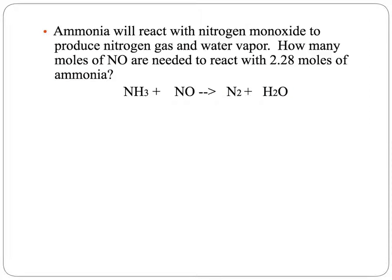Here's another problem. Ammonia will react with nitrogen monoxide to produce nitrogen gas and water vapor. We have the skeleton equation, but it's not balanced — we have three hydrogens on one side and only two on the other. The equation is a bit trickier because nitrogen appears in two different substances: the ammonia and the nitrogen monoxide. The balanced equation has 4 moles of ammonia reacting with 6 moles of nitrogen monoxide to produce 5 moles of nitrogen gas and 6 moles of water.